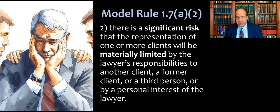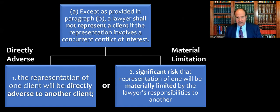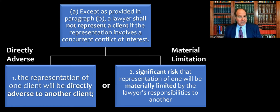There are two broad categories of conflicts of interest. We have directly adverse conflicts and what we call material limitation conflicts. Directly adverse conflicts are where clients' legal interests are pitted against each other, either in litigation or transactional matters. Material limitation, for simplification, you should think of as undue influence or bias — or at least the appearance of bias — on the part of the lawyer, where something is interfering with the lawyer's independent professional judgment.